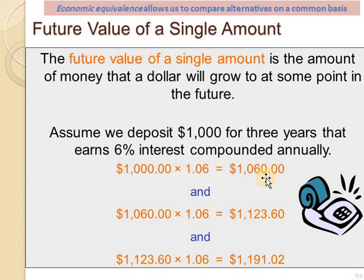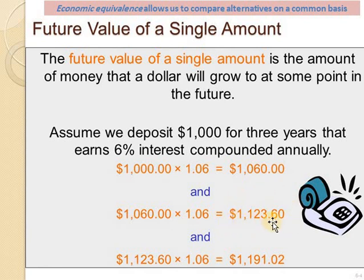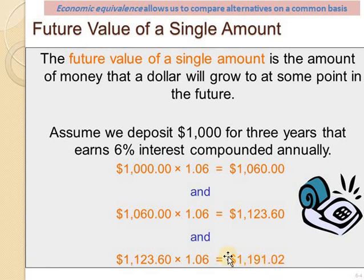By the beginning of the second year, the $1,060 is the original amount in my bank account. I earn 6% over this amount, so the final amount by the end of the second year is $1,123. At the beginning of the third year, I again earn 6%, and the final amount by the end of the third year is $1,191. So beginning with $1,000 at 6%, after three years you get this amount.